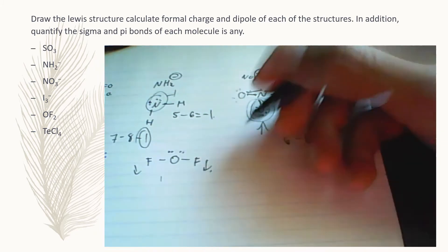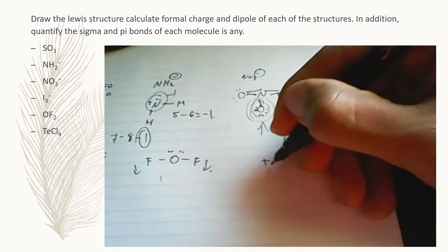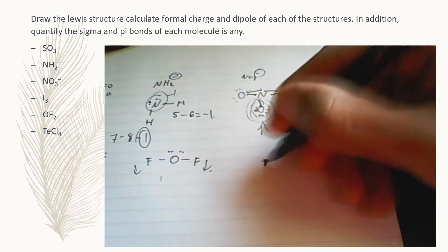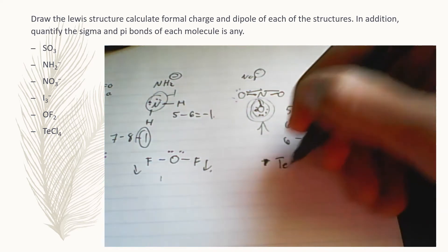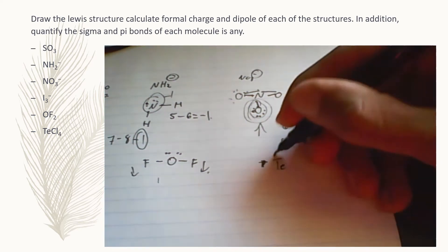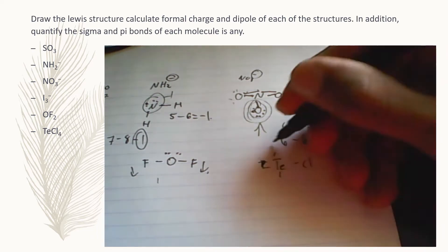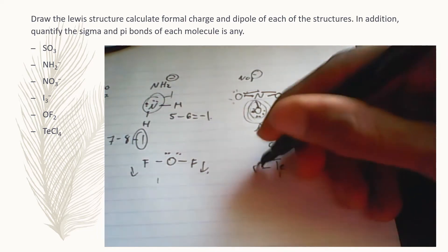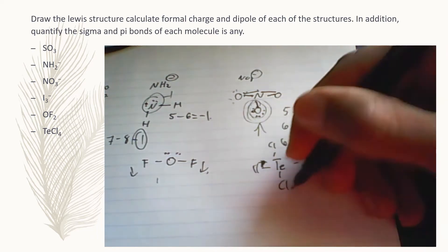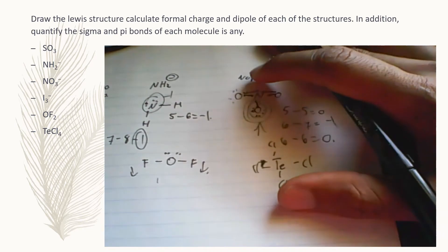Last but not least is tellurium tetrachloride, TeCl4. It's going to be a tetrahedral molecule, and all the valencies are going to be zero.